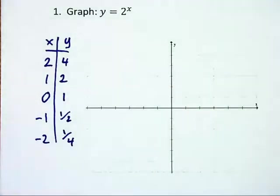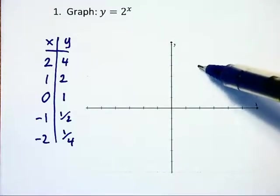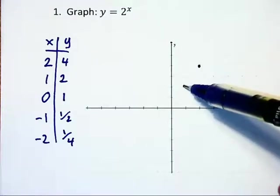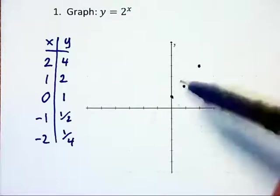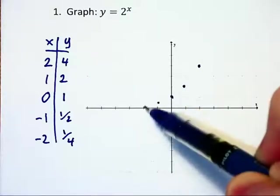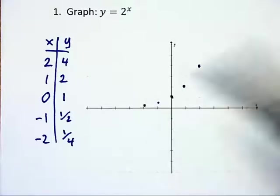Let's plot these points here, beginning with 2, 4, then 1, 2, then 0, 1, negative 1, 1 half, negative 2, 1 quarter.